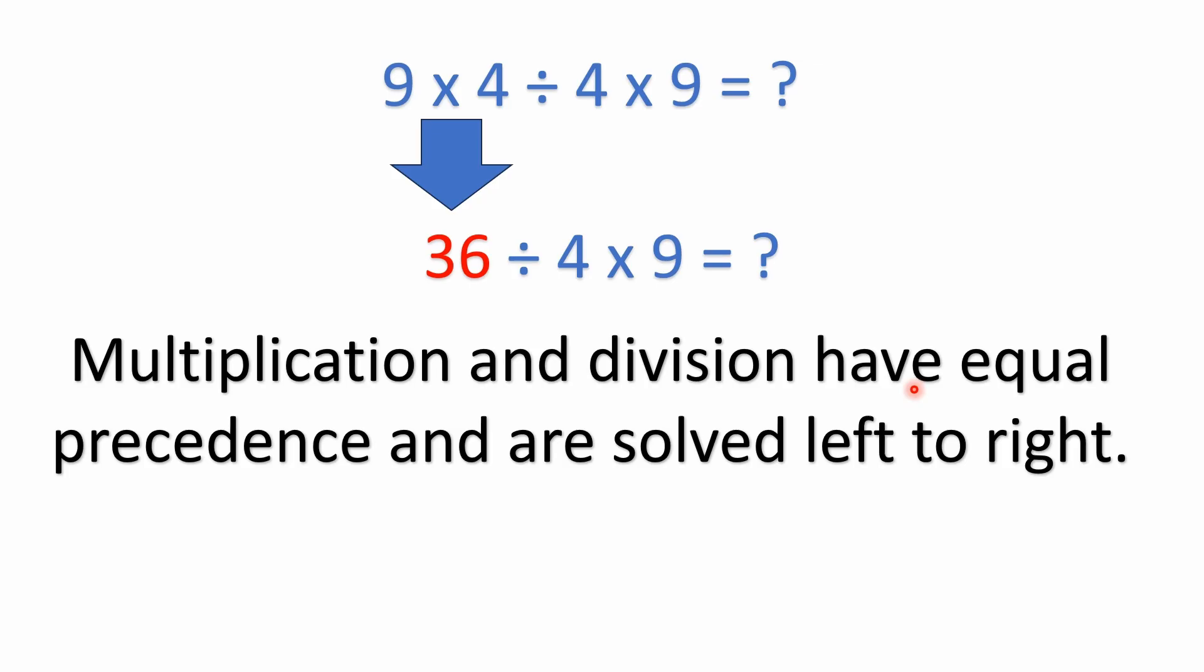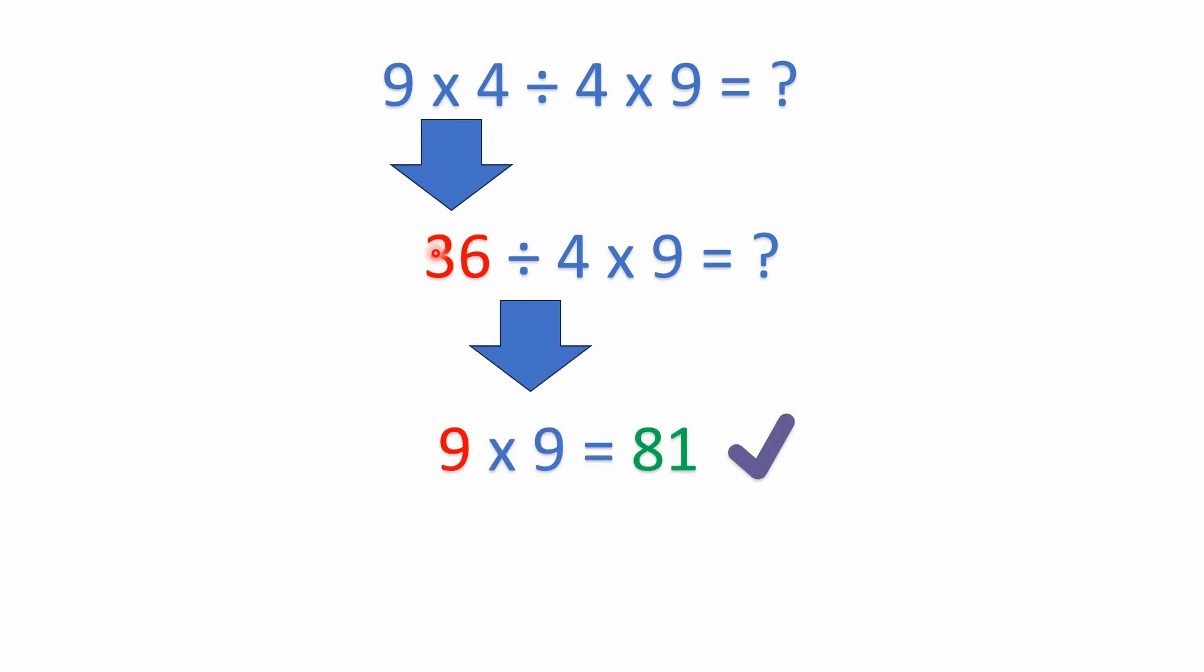Alright, so remembering we don't have parentheses, we don't have exponents, so we're going to do multiplication first because as we read left to right we see multiplication first. We see 9 times 4. Well, 9 times 4 is 36. So we've got our 36 here. We're simplifying the problem.